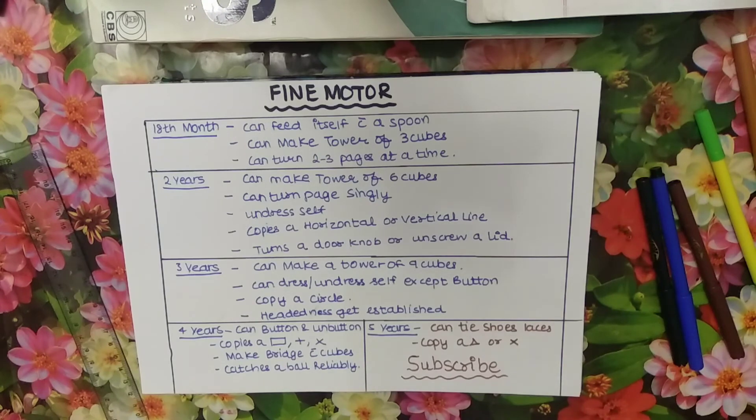Four year baby can button and unbutton the shirts. Four year baby can copy a rectangle plus sign and the multiplication sign. Four year baby can make bridge with the cubes and catches a ball reliably.